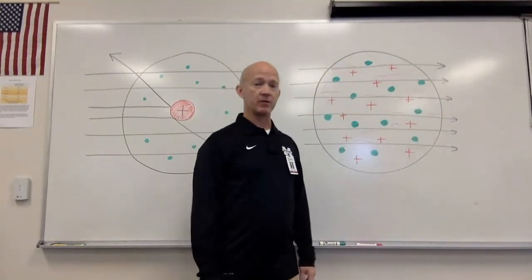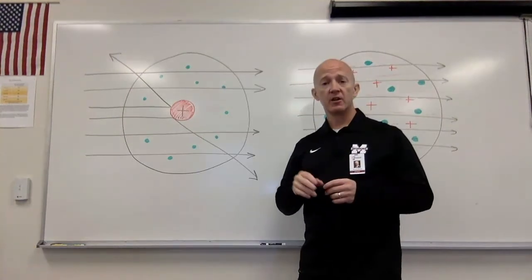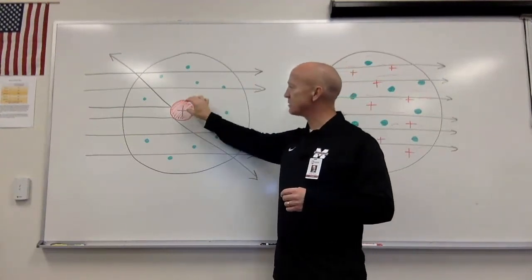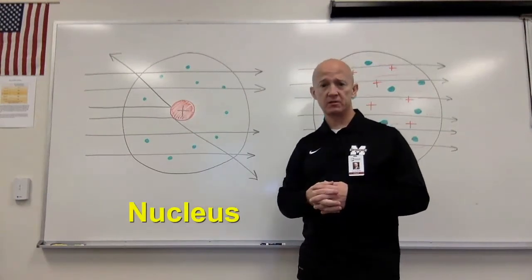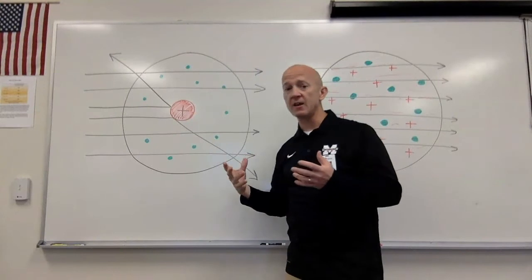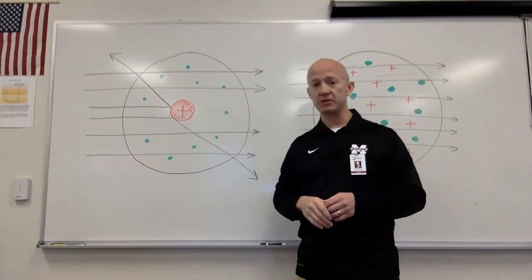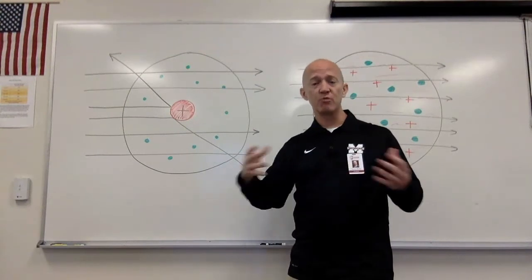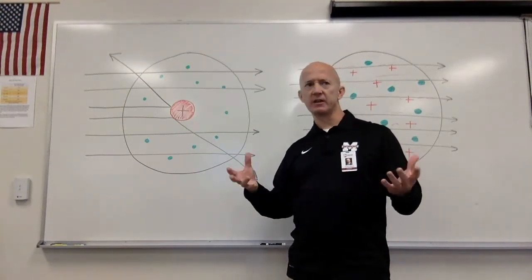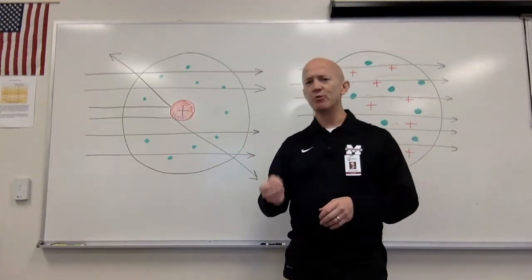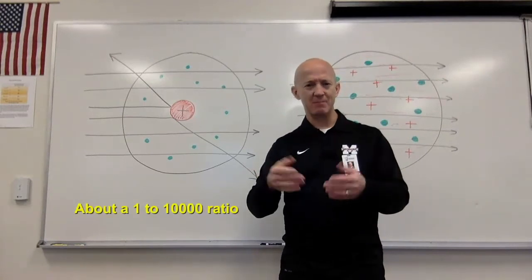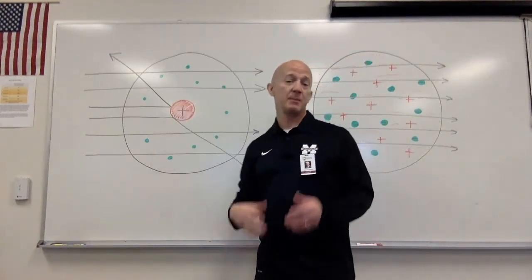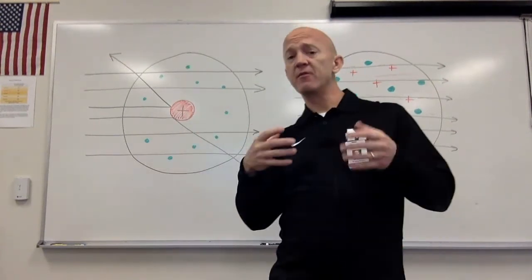If the Plum Pudding Model was correct, the pathway of the alpha particles would just go straight on through, hitting nothing of consequence to cause deflection. Instead, Rutherford proposed that the positive charge of the atom and most of its mass was actually located in a dense portion in the center of the atom that he called the nucleus. The negatively charged electrons are still held in the atom because of their attraction to that positively charged nucleus. The nucleus is extremely small compared to the rest of the atom — if the atom were the size of Bank of America Stadium, the nucleus could be represented by a marble placed at midfield. The repulsive force between the positive nucleus and the positively charged alpha particles explains the deflections.